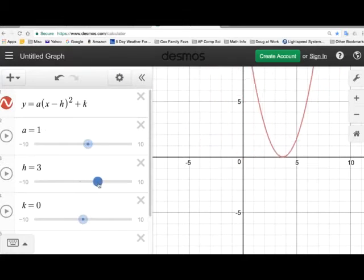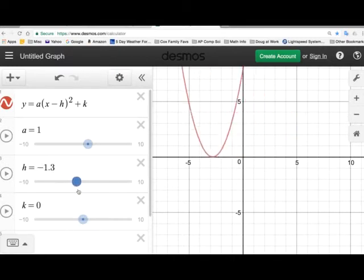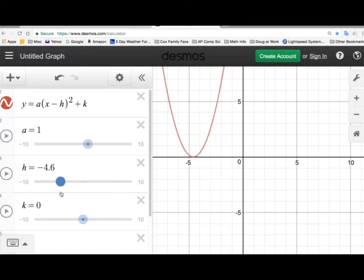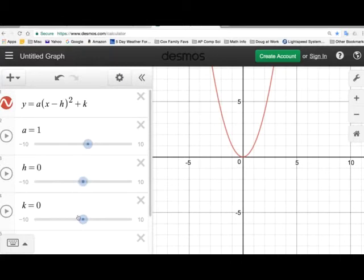H, you'll see, moves it to the right or moves it to the left. When h is positive, it's going to be going to the right. When it's negative, it's going to be going to the left. More on that to follow. Let me go ahead and move it back to 0 here. And k, if I make it positive, it's going to make the graph move up. And if k is negative, it's going to go down. So h and k make it shift.